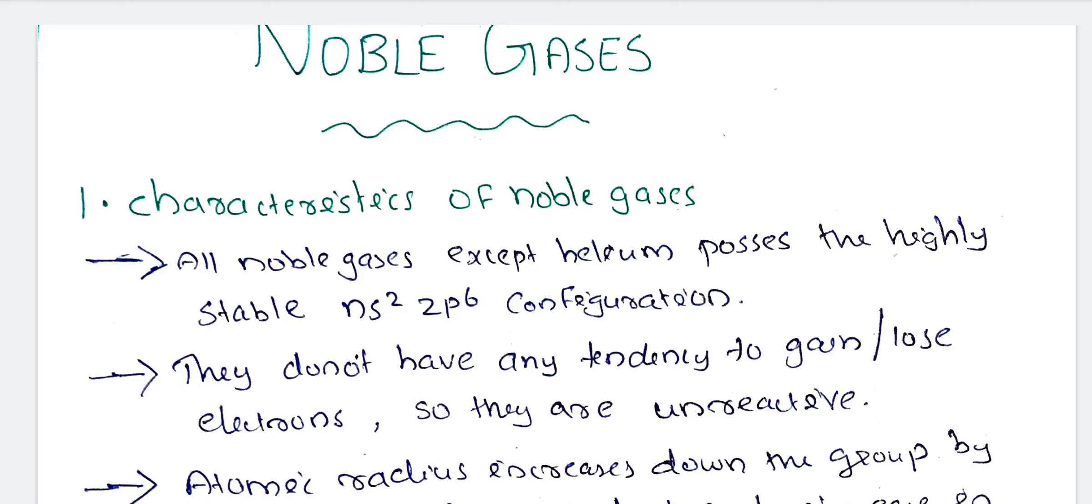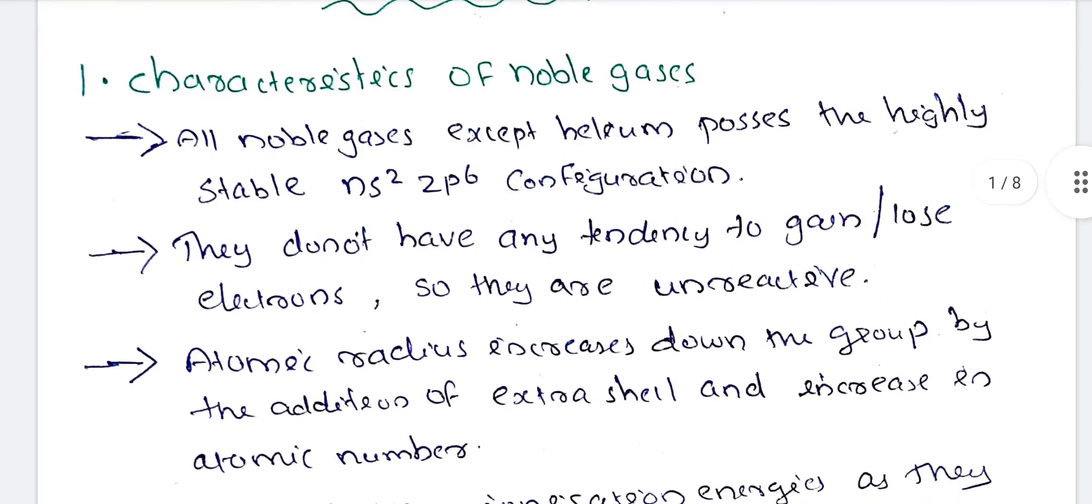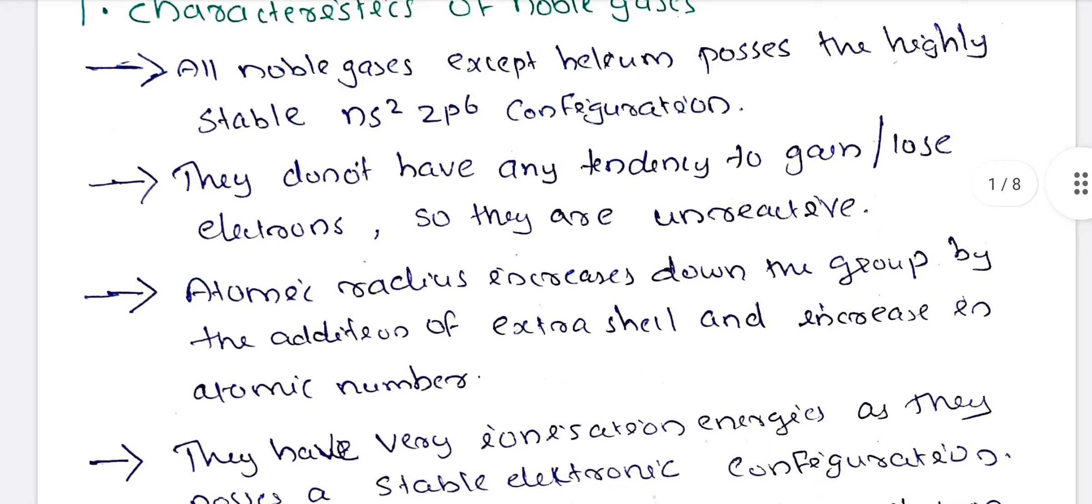We are going to talk about General Characteristics of Noble Gases. All noble gases except Helium possess highly stable ns2-np6 configuration. They do not have any tendency to gain or lose electrons because they are already completed.